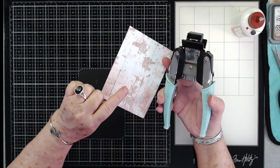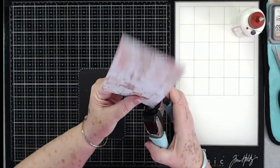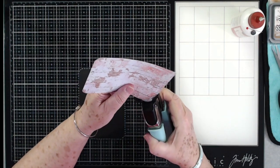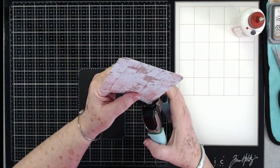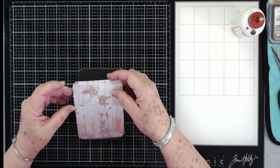And then we're going to go ahead and round this piece off. This piece is cut at four by five and a quarter. I'm just using my We R Memory Keepers corner chomper, and then we're going to put that down right there.